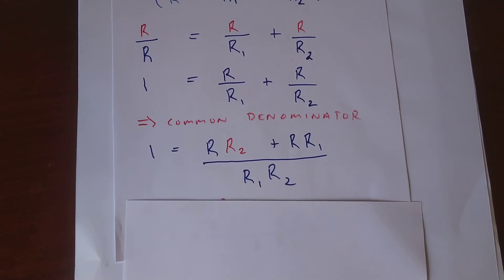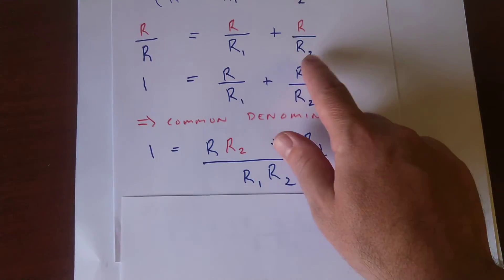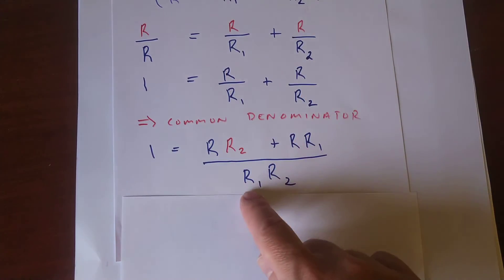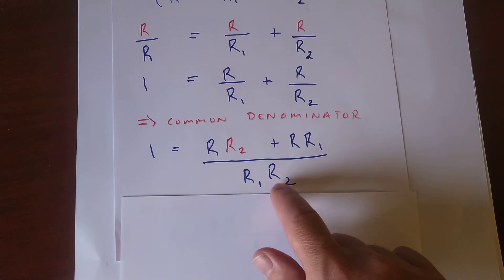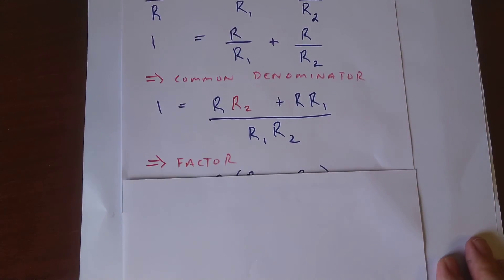So multiply the top and bottom. Here, we're going to multiply by R₂. Here, we're going to multiply by R₁. And here's what we're left with. And we can put it all over one denominator. And now we can factor out the R.